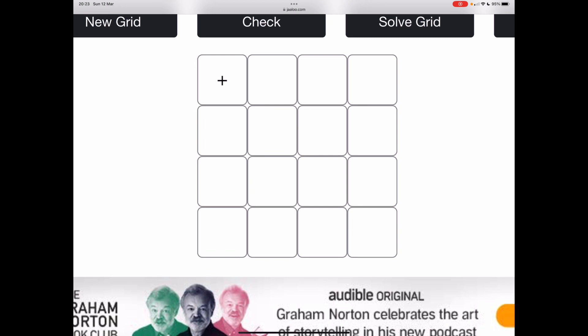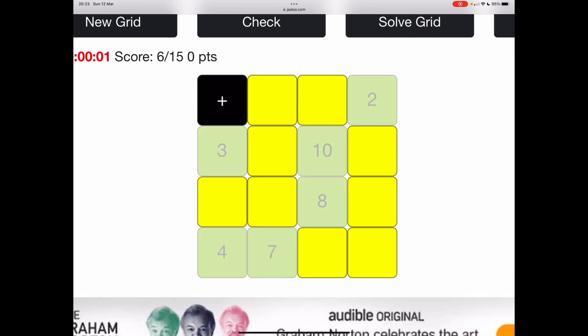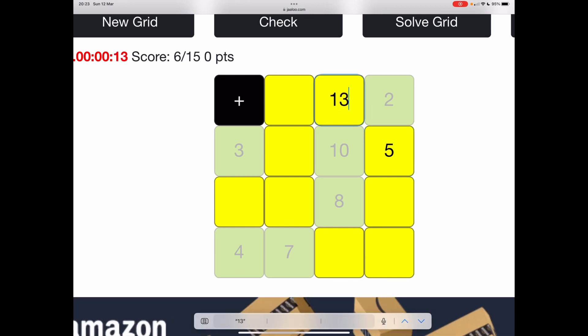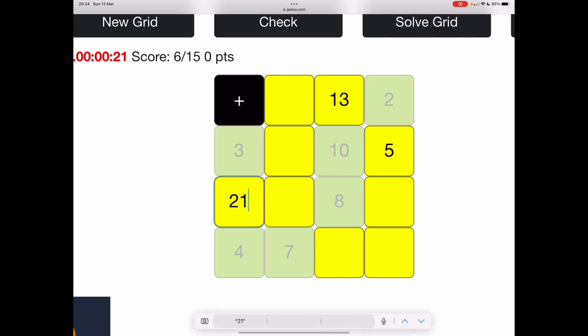I'm going to press New Grid, so it has the time I started. Three plus two is five, three plus ten is thirteen, excuse me, thirteen plus eight is twenty-one, four plus seven is eleven, eleven plus three is fourteen.